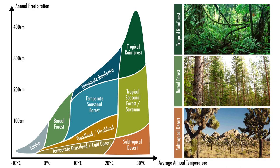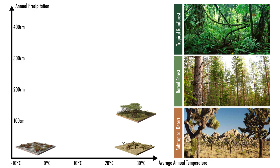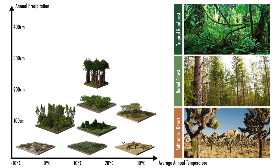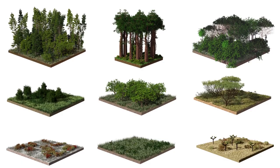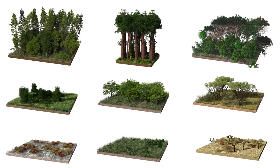The two-dimensional temperature-precipitation space allows for characterizing the main types of plant ecosystems: desert, tundra, savanna, grassland, shrubland, boreal forest, temperate seasonal and rainforest, as well as tropical seasonal and rainforest. Our approach is able to appropriately grow all these nine distinct plant ecologies shown in the temperature-precipitation diagram.